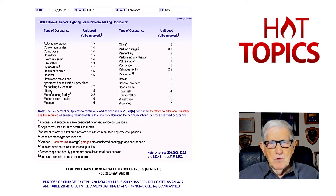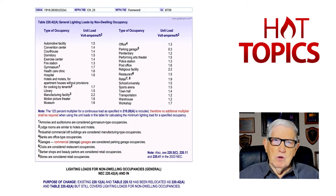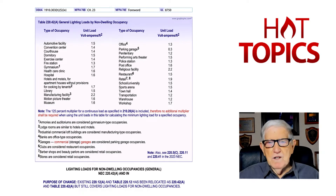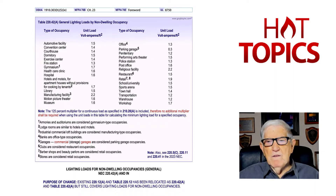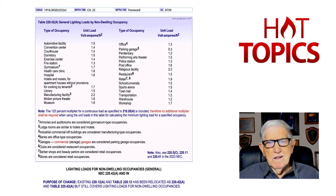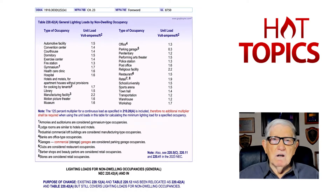The note says the 125% multiplier for a continuous load as specified in 210.20a is included. Therefore, no additional multiplier shall be required when using the unit loads in this table for calculating the minimum lighting load for a specific occupancy.